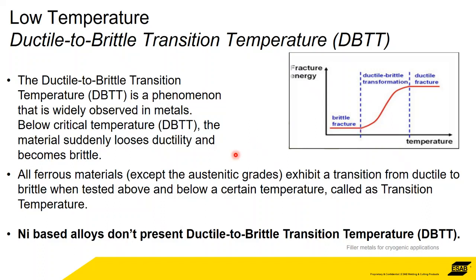All ferrous metals, apart from austenitics, exhibit this transition temperature. However, because of the way nickel is structured on a microscopic scale, nickel-based alloys don't present this transition temperature. In previous talks I've gone into detail on the composition of nickel alloys and why they exhibit the mechanical properties they do. Based on their composition and the way they're made, they don't exhibit the ductile-to-brittle transition temperature — and that's why they're used.